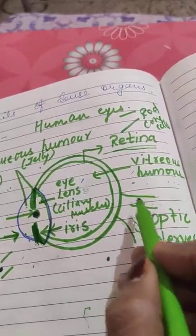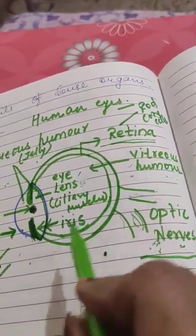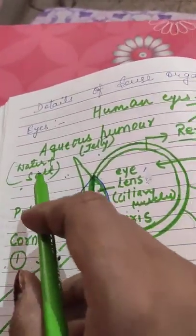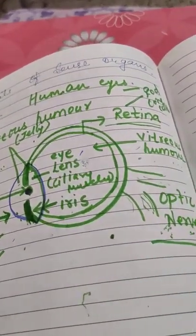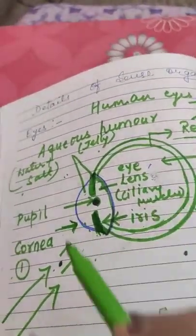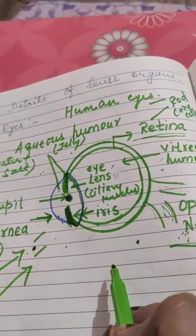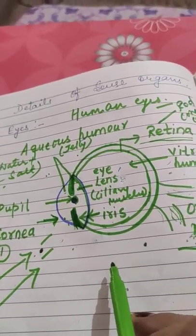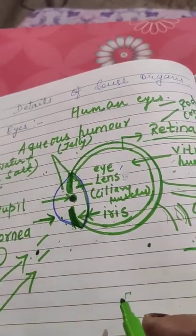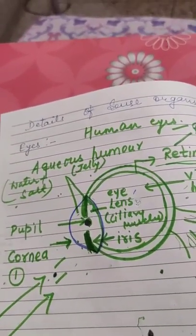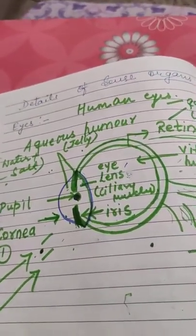There is a fine thread-like structure called the optic nerves. The optic nerves carry all the information about the cornea, pupil, retina, and lens, and send that information to the brain. The brain then responds, directing the body accordingly. That is the complete diagram of the eye. The next topics — nose and ear — will be covered in the next video. Thank you.